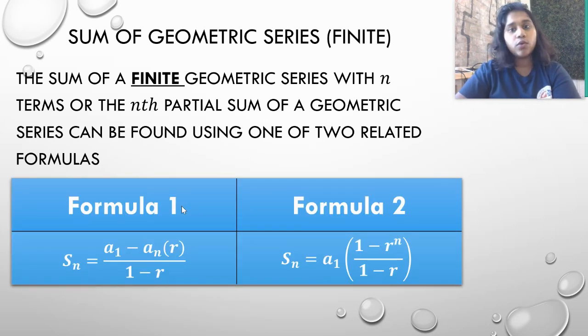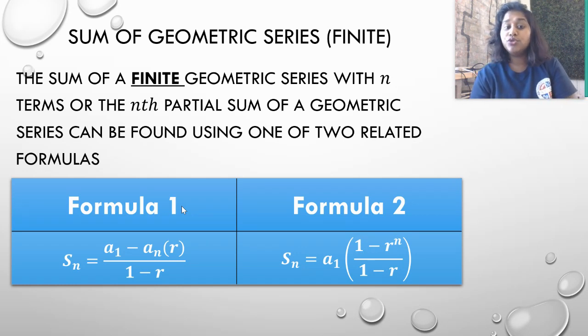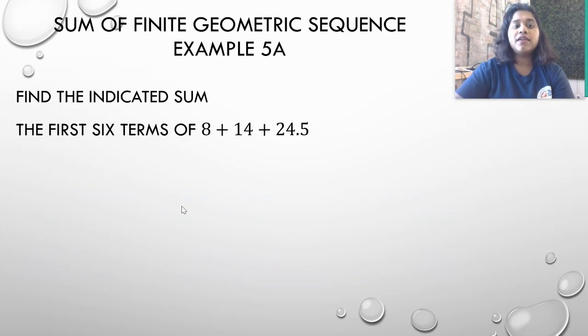We have these wonderful formulas for finite series. If you notice the difference between formula 1 and formula 2, it just comes down to what you know. Formula 1, you know the last term and formula 2, you do not. So it comes down to what you know and what you don't know. So let's find the indicated term of the first six terms of 8 plus 4 plus 24.5.